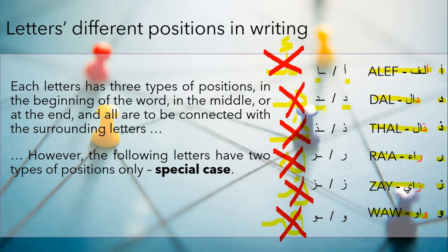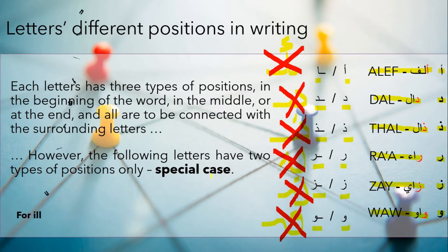So all of these are special cases — we cannot connect them. They have only two ways to be linked to surrounding letters: whether at the beginning or at the end. Even if they come in the middle of a word, they will be treated as if coming at the end. Alif, Dal, Thal, Ra, Zay, and Waw will come exactly the same way as presented — they will not have any third position.